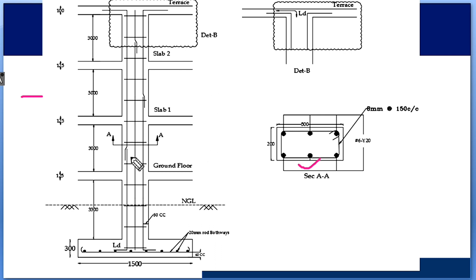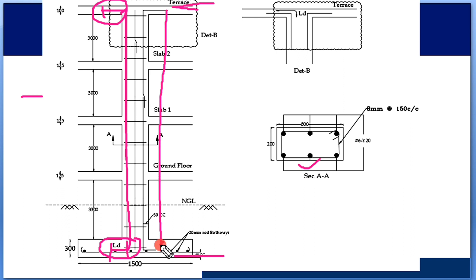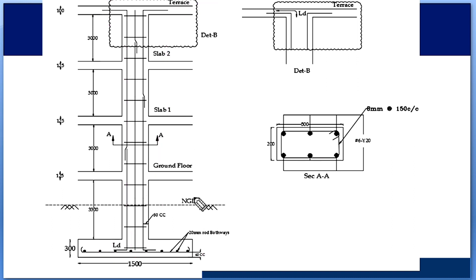Let us look at the diagram of the column. This is the base level, which is the foundation, and this is the topmost level, which is the terrace — the top floor of the building. The main rod runs from the foundation up and then bends. There are different parts in the longitudinal rod. The portion from bottom to a certain level is known as development length (Ld), and if a single rod does not reach from the foundation to the top, we overlap two rods to make it continuous.